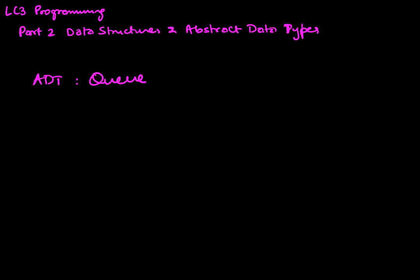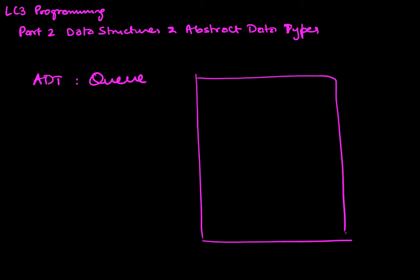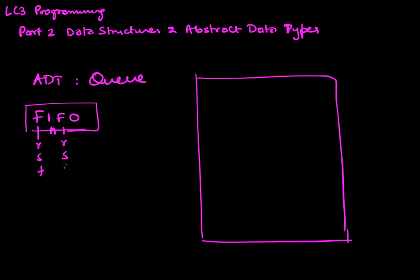Remember that an abstract data type is entirely determined or described by the operations we perform. Our abstract data type Queue is also a first-in, first-out mechanism, which means the first element I put in is the first element that's going to come out.